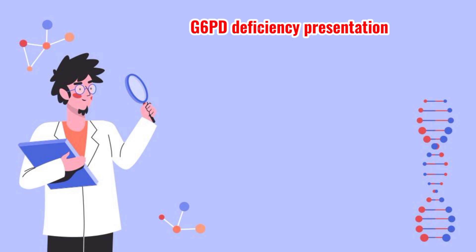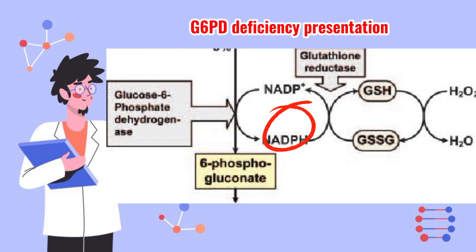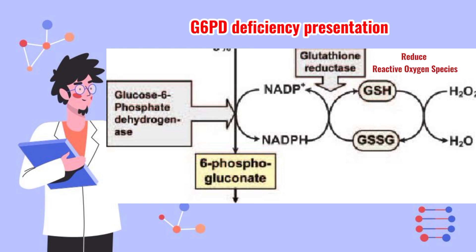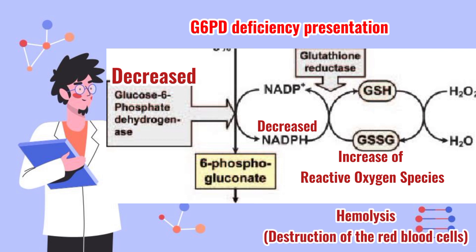Next is how this deficiency mainly affects the human body. Starting from the chart provided, the G6PD enzyme is the first step in the pentose phosphate pathway. This enzyme generates NADPH from the dehydrogenase reaction of glucose-6-phosphate. The NADPH produced can then be utilized by glutathione reductase to reduce the amount of reactive oxygen species (ROS). When a person lacks the glucose-6-phosphate dehydrogenase enzyme, NADPH production decreases, causing ROS to increase, which damages red blood cells, leading to hemolysis and anemia.